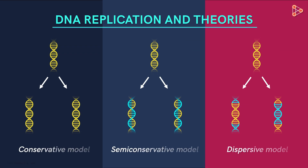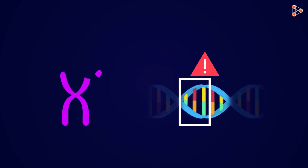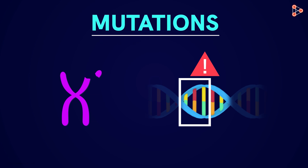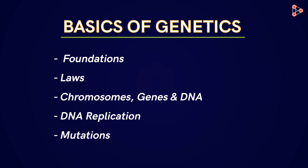After this, we will talk about how the molecule replicates and the theories put forth to explain that. Lastly, we will have a look at what happens if there are errors while replicating the DNA molecule or in the complete chromosome — that is, we will have a look at an interesting concept called mutations. Let us understand the basics of genetics in our upcoming videos.